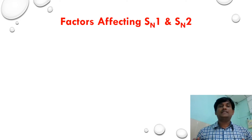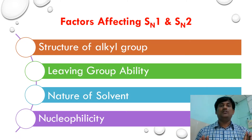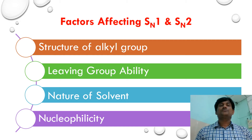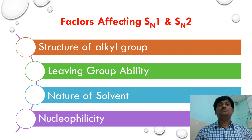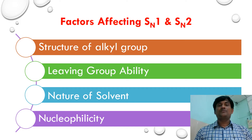Hello learners. In the coming videos, we will discuss factors affecting SN1 and SN2 reactions. Generally, the rate of SN1 and SN2 reactions depends on four factors: the structure of the alkyl group, the leaving group ability, the nature of solvent, and the nucleophilicity of the nucleophile.